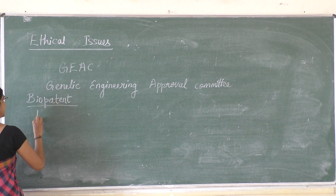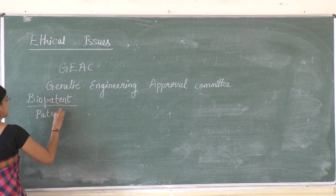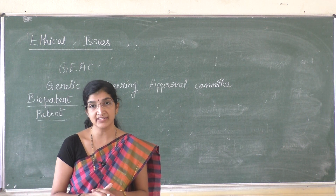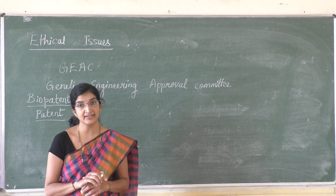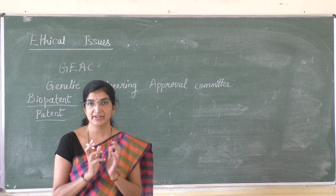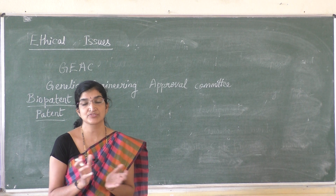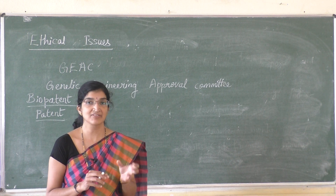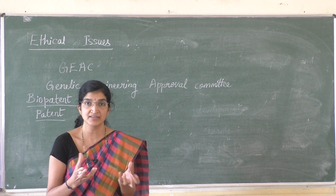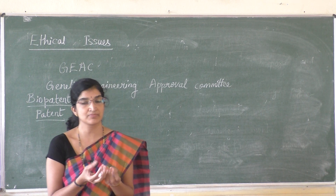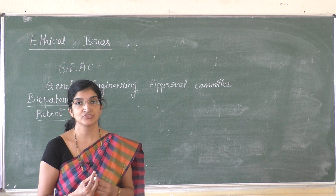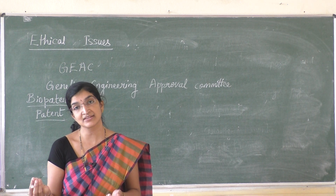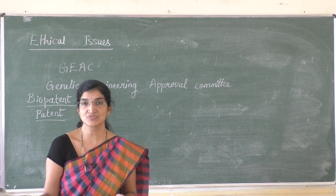Patent - let us see what is meant by patent. Patent is essentially a contract between the society as a whole and an inventor. The inventor may invent a particular organism or particular thing, or he may discover a particular property from a particular organism, or he may discover how a particular property is useful.